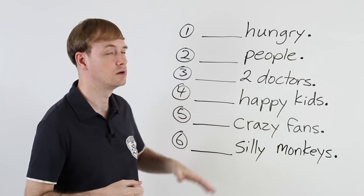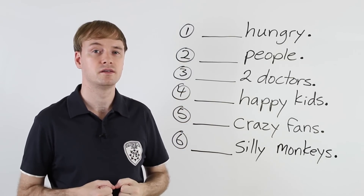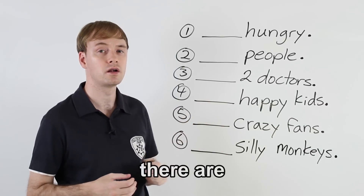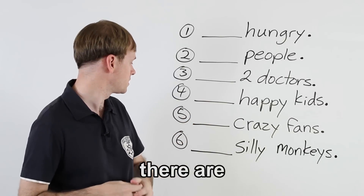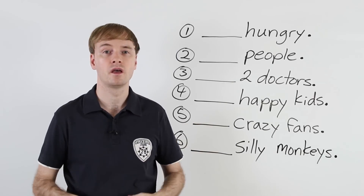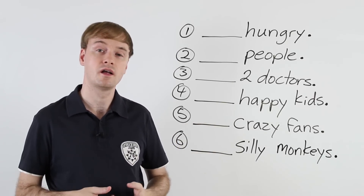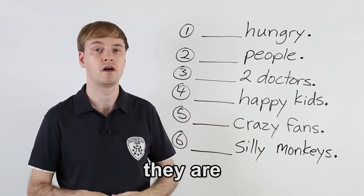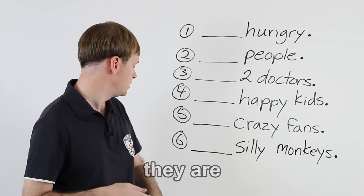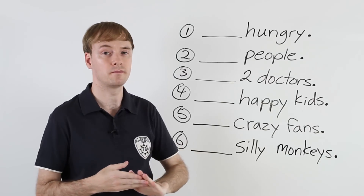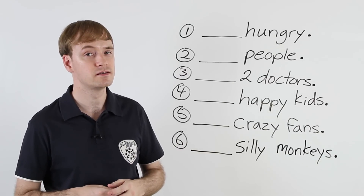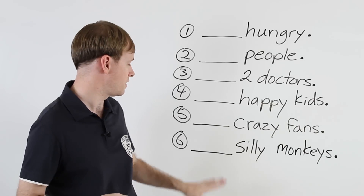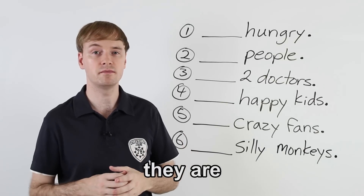Number four: there are happy kids. There are happy kids — 'there are.' Number five: they are crazy fans. They are crazy fans — 'they are.' Number six, the last one: they are silly monkeys. They are silly monkeys — 'they are.'